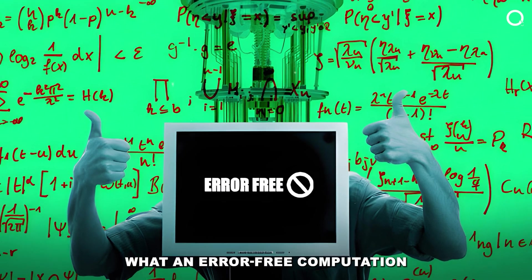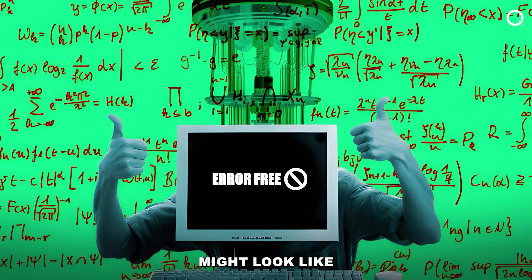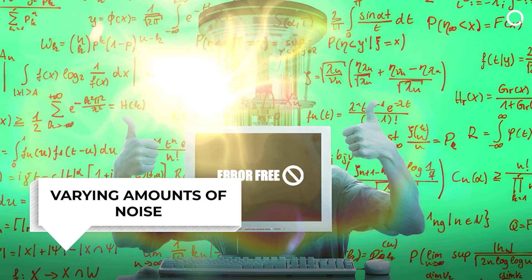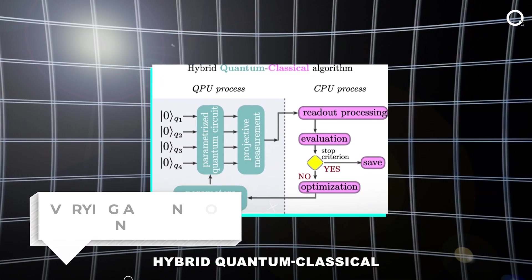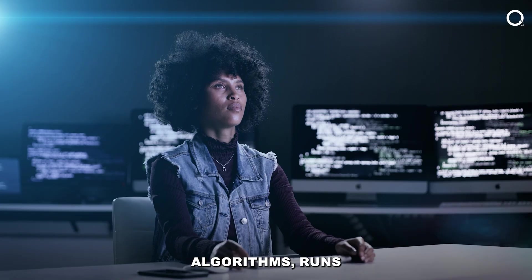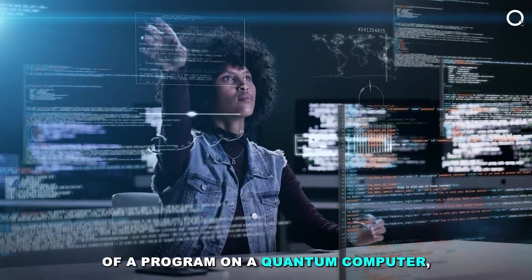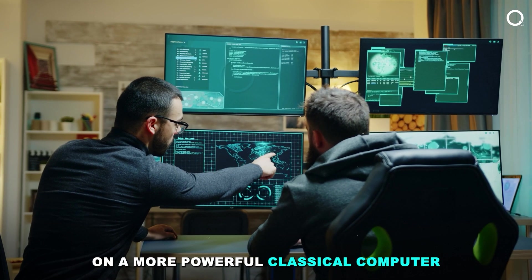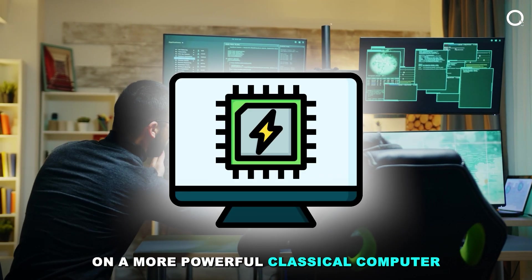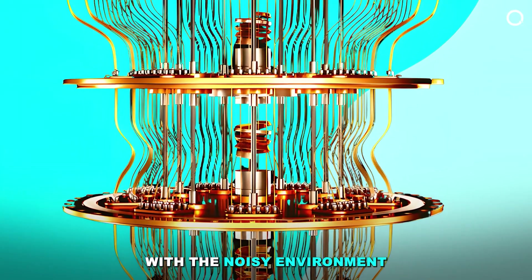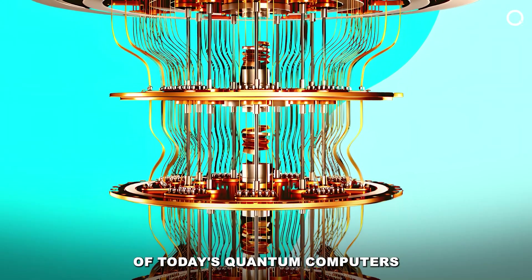One method is to predict what an error-free computation might look like based on the outcomes of computations with varying amounts of noise. An entirely different approach, hybrid quantum classical algorithms, runs only the most performance-critical elements of a program on a quantum computer, while the rest of the program is processed on a more powerful classical computer. These and other solutions have proven effective in dealing with the noisy environment of today's quantum computers.